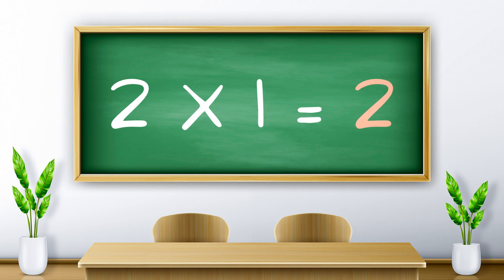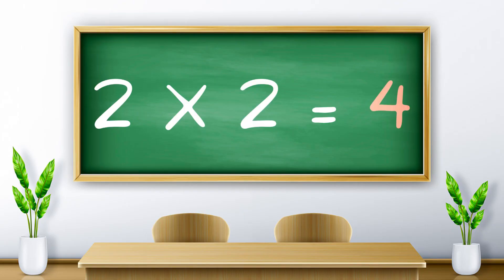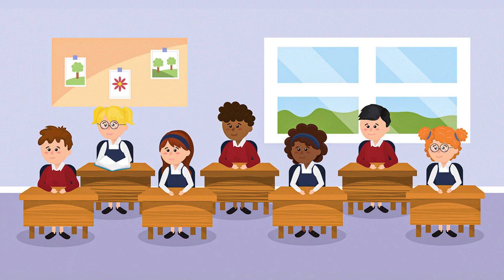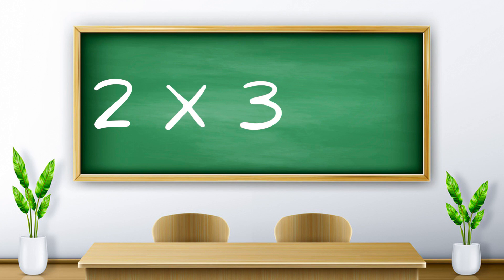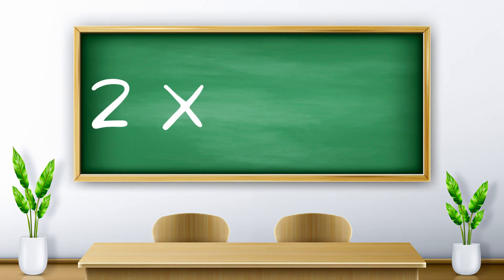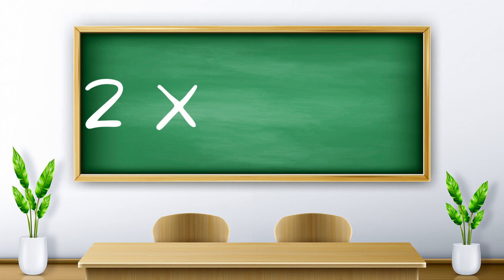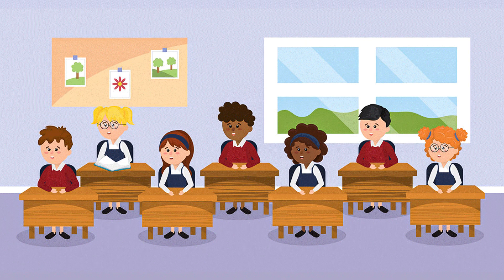Two ones are two. Two twos are four. Two threes are six. Two fours are eight. Two fives are ten.